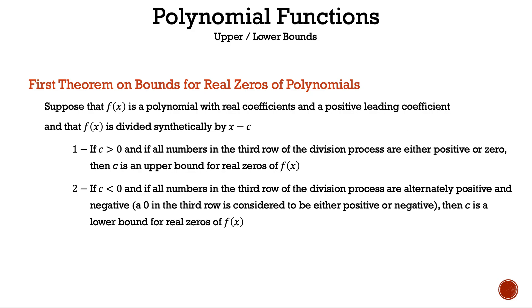Statement 1: If c > 0 and if all numbers in the third row of the division process are either positive or zero, then c is an upper bound for real zeros of f(x).